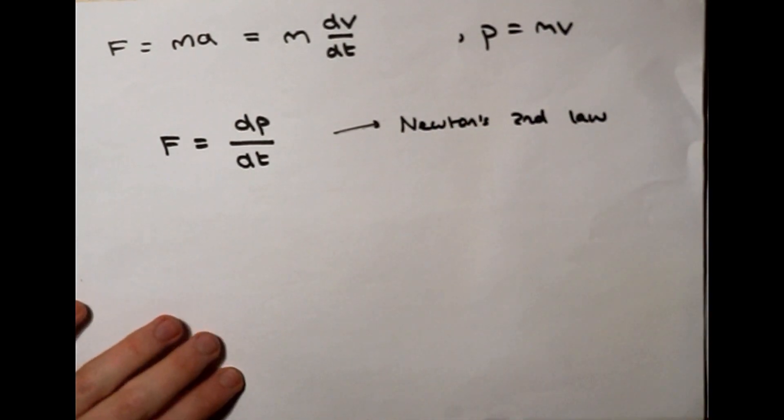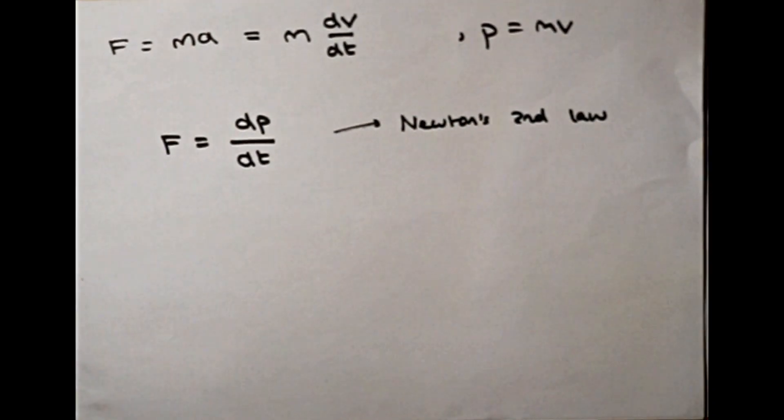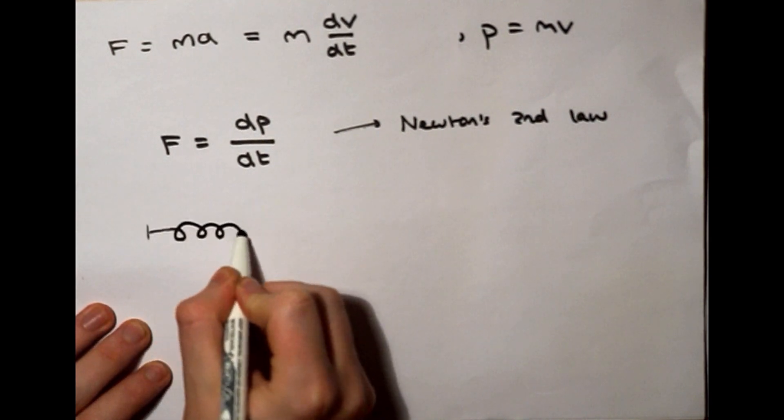Now if we just park this equation for the moment, let's consider a force acting on an object which is a function of position only. This is called a conservative force. A force of this type can be obtained by taking the negative of the derivative of the potential energy of the object with respect to its position.